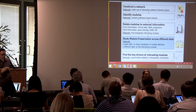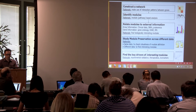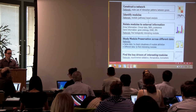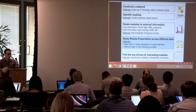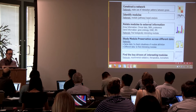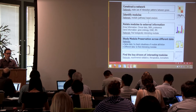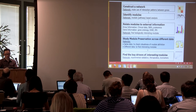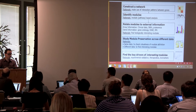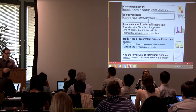We assess module preservation for two reasons. First, to check the robustness of our modules. For example, if we have a cortical gene expression dataset and find our modules, we want to see if they are preserved in a second dataset — possibly measured on a different platform, such as an Affymetrix array versus RNA-seq. We want to confirm the module is biologically meaningful, not an artifact.